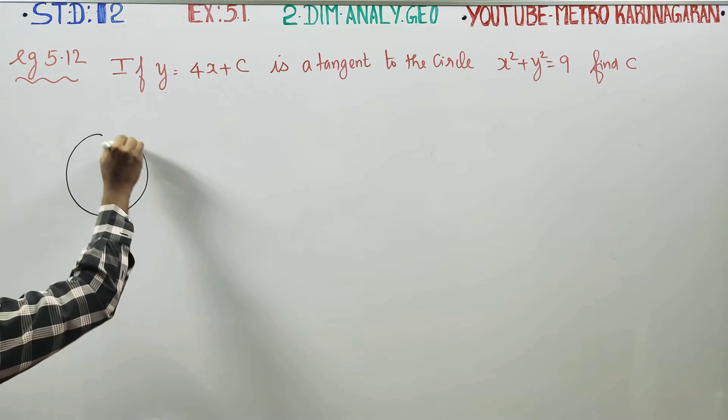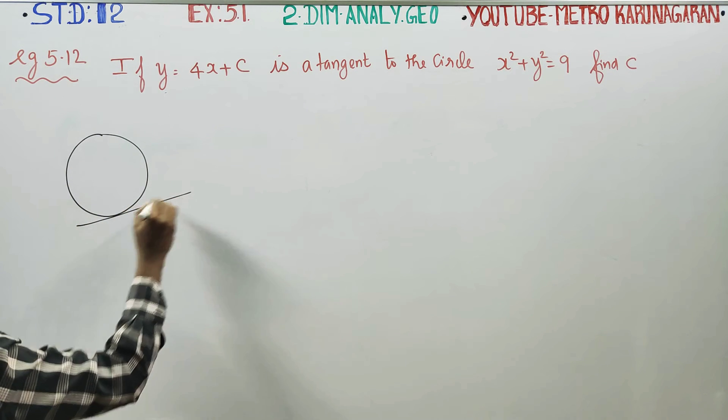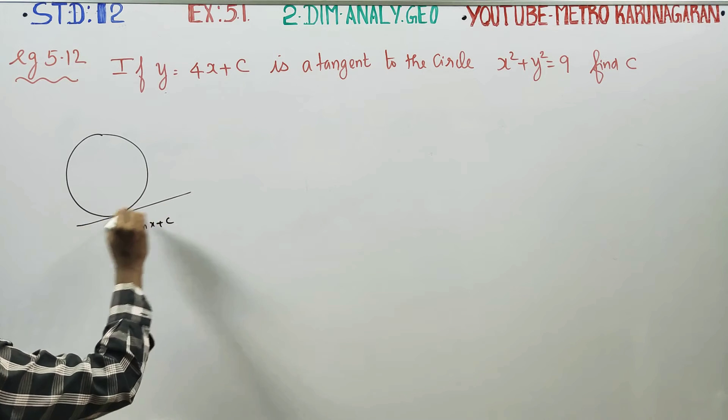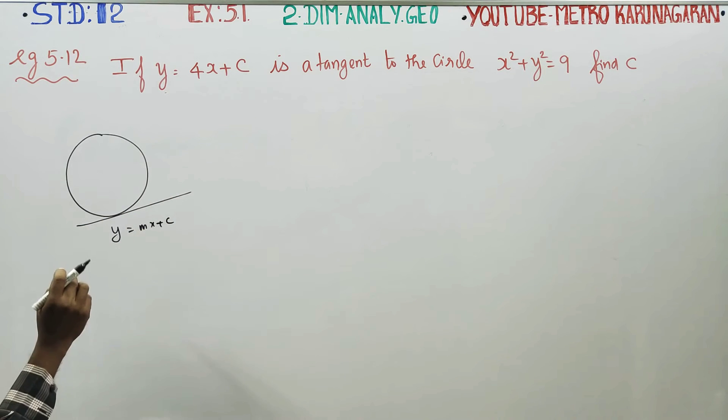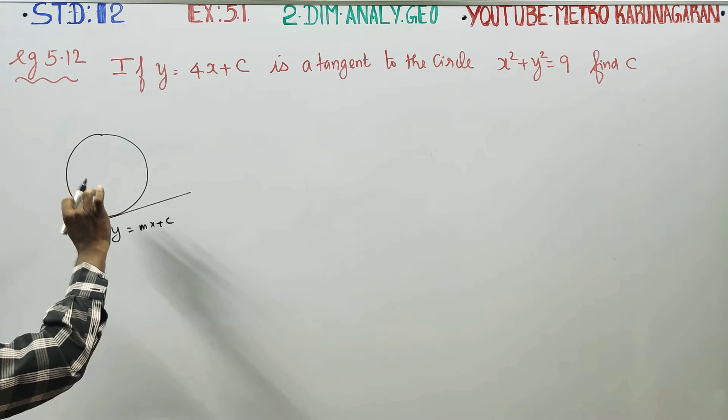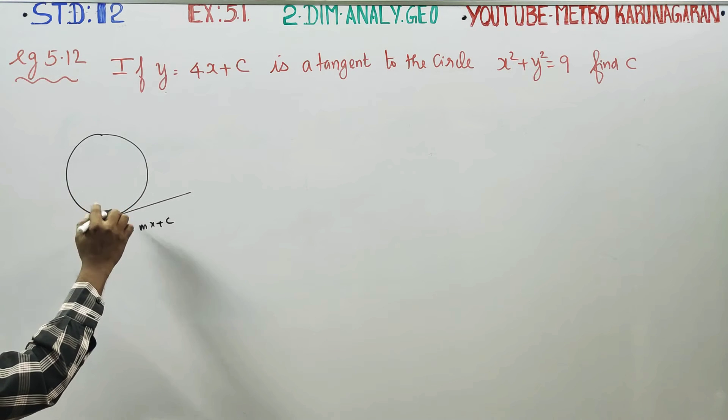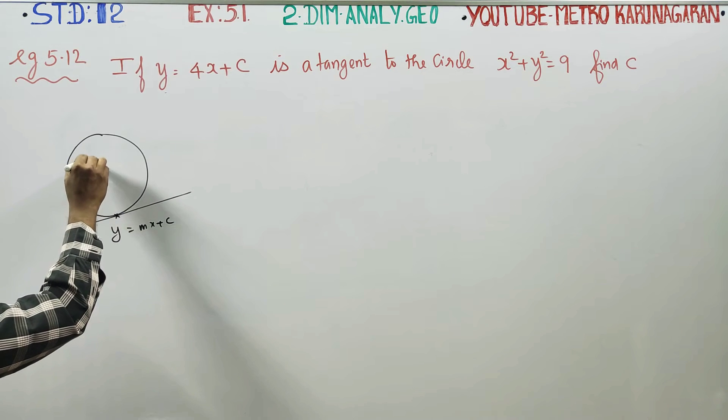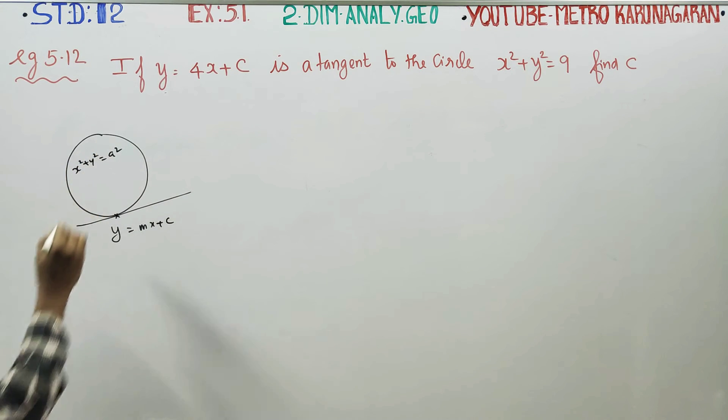If any straight line of the style y is equal to mx plus c is tangent to the circle x square plus y square is equal to a square, it must satisfy a specific condition.